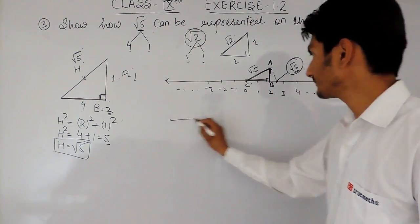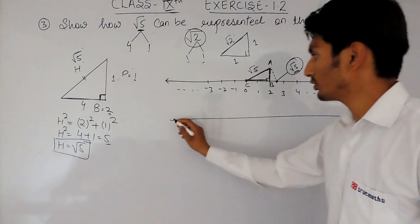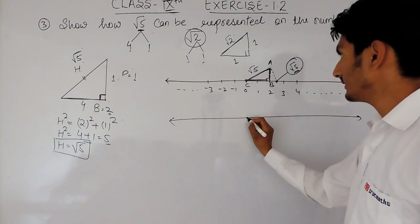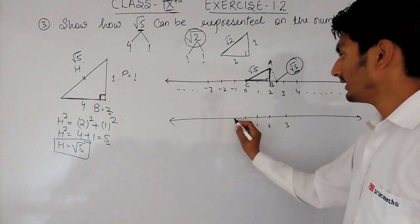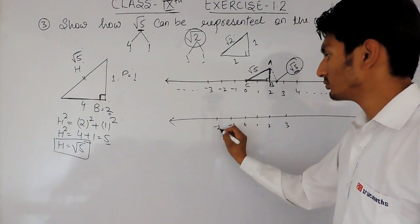same thing, I have to draw on the number line. This is 0, this is 1, this is 2, this is 3 and this is minus 1, minus 2 and so on.